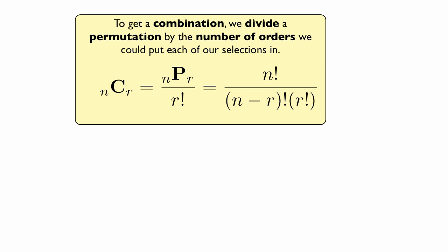Basically, a combination will almost always be less than a permutation, given n objects and you're picking r of them at a time.